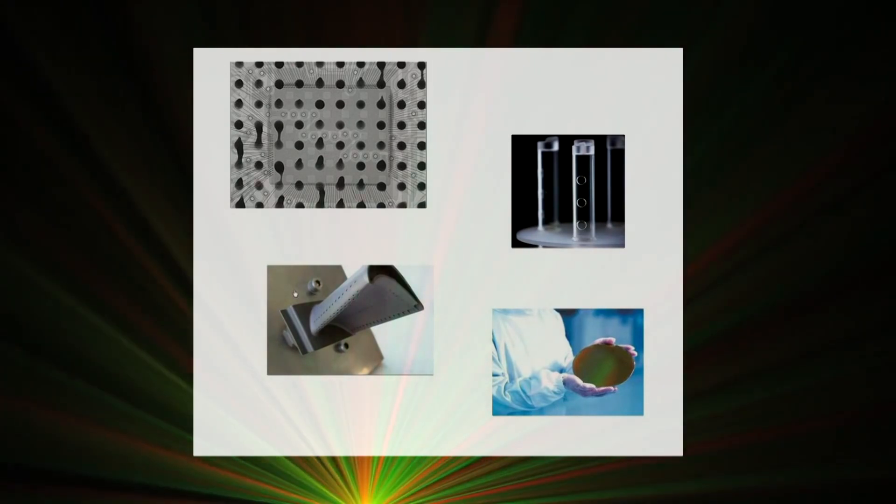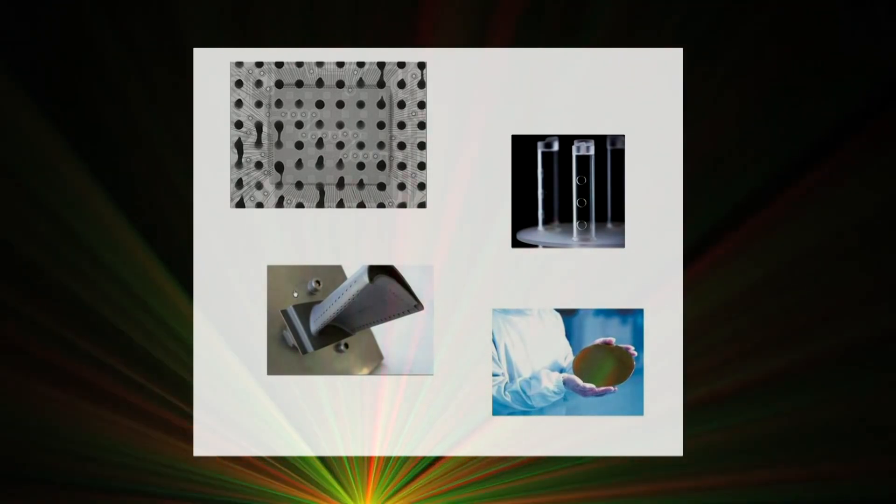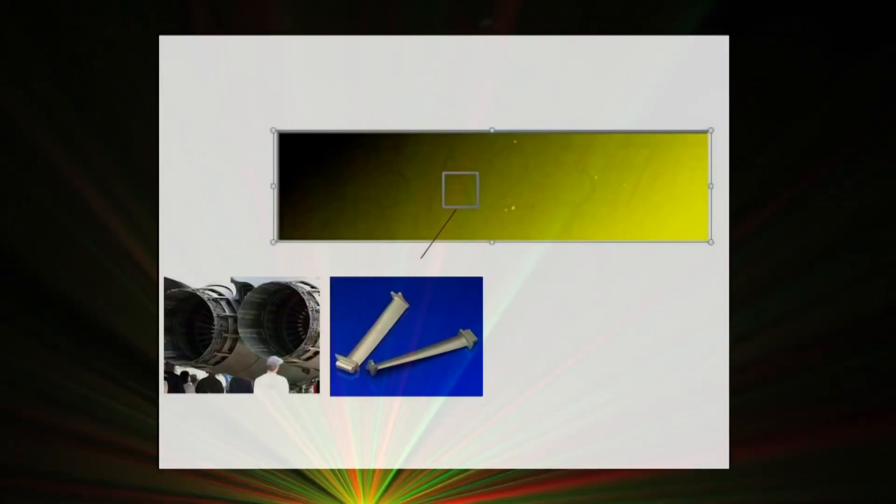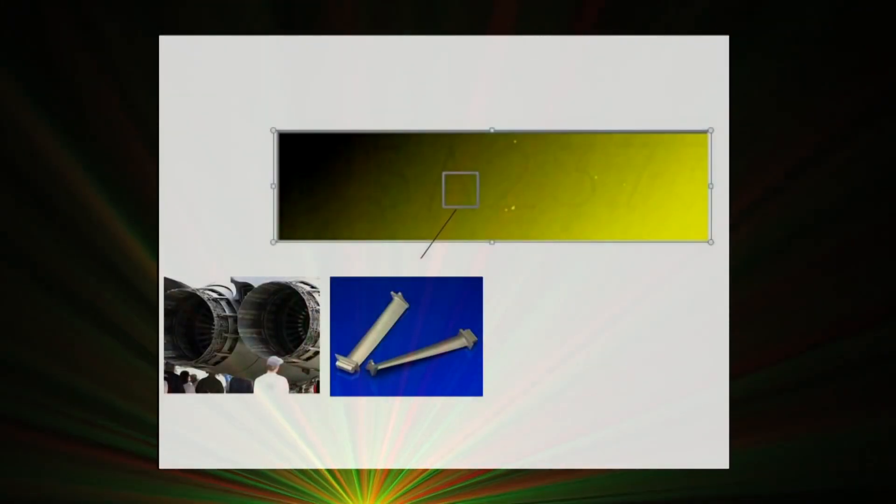That might mean, for example, a drilled hole that does not go as deep as it should or goes too deep, or an illegible serial number marked on a jet engine blade, resulting in scrapped parts.